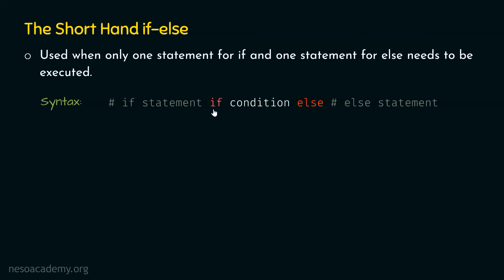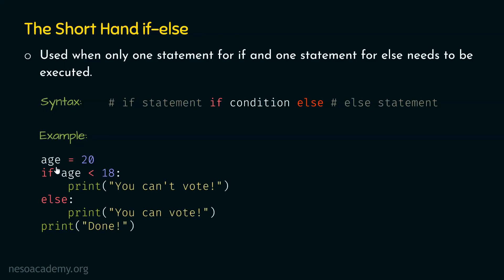The syntax looks like this. The if-statement comes before the if-condition. If the condition is satisfied, the if-statement executes; else, the else-statement executes. Let's consider the same example: age is 20, and we check if age is less than 18, then print you can't vote; otherwise, print you can vote, and then done. Since there is just one statement in both if and else, we can use shorthand if-else. The if-statement comes before the if-condition, so we write: print you can't vote if age less than 18.